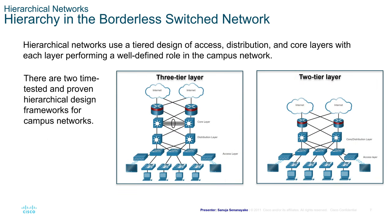Hierarchy in the borderless switch network. Hierarchical networks use a tiered design of access, distribution, and core layers, with each layer performing a well-defined role in the campus network. There are two time-tested and proven hierarchical design frameworks for campus networks: the three-tier type and the two-tier type. In the next few slides we will discuss how these three-tier and two-tier network designs work.